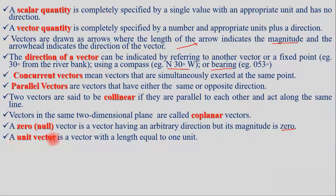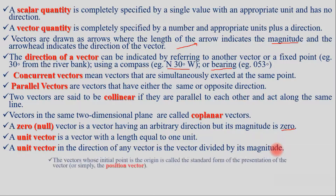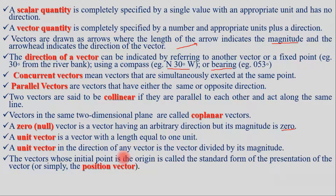A unit vector is a vector with a length equal to 1 unit. A unit vector in the direction of any vector is obtained by dividing that vector by its magnitude. A vector whose initial point is at the origin is called a position vector or standard form.